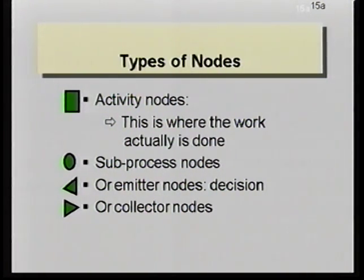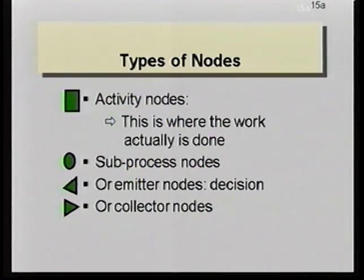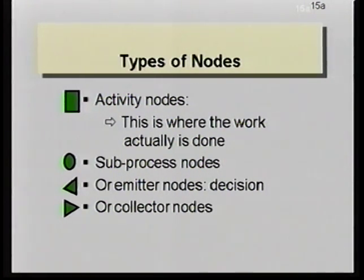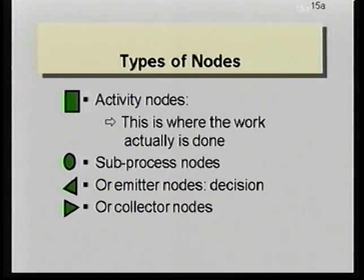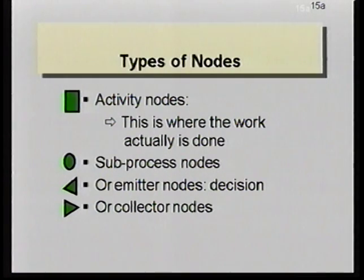The oval or circular nodes we call subprocess nodes, and what these do is allow us to refer symbolically to other processes. For example, in the node labeled 'pay', you might have another process that implements actually issuing an expense check. This node would refer symbolically to that process. So when the work reached the pay node, other instances of work flow could be created — what we call forked or spawned — into this other process. This allows us to assemble larger, more complex processes from smaller ones.